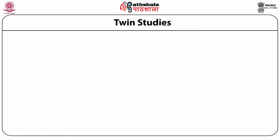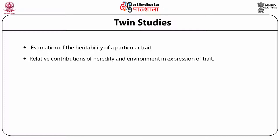Twin studies have been extensively used in human genetics to estimate the heritability of a particular trait, where the relative contribution of heredity and environment may result in varied phenotypic expression. The method analyzes the genetic contribution of a particular trait as against the environmental factor. Perhaps the first systematized study on twins was reported in 1924, where geneticist Herman Siemens compared school transcripts of identical versus fraternal twins to understand genetic influence on traits.